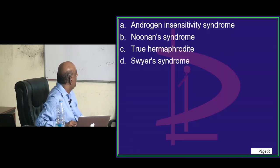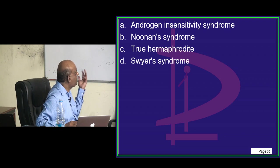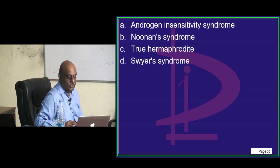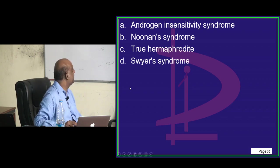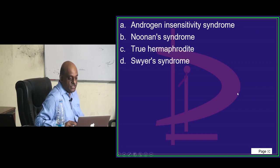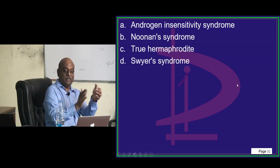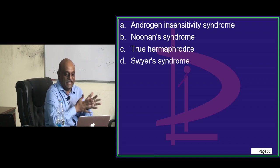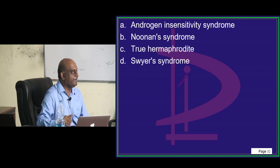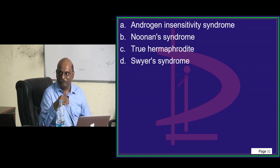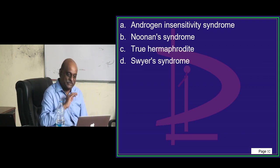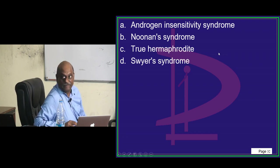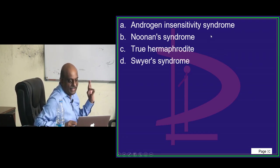The options are: androgen insensitivity syndrome, Noonan syndrome, true hermaphrodite, or Swyer syndrome. Shilpa proposes androgen insensitivity syndrome. Sam Singh proposes Swyer. The answer is Swyer syndrome, doctor — all who said D are correct. Remember: it is an XY karyotype, vagina is present but does not end in a blind pouch, and there is a normal uterus — that is the fundamental difference from androgen insensitivity syndrome.